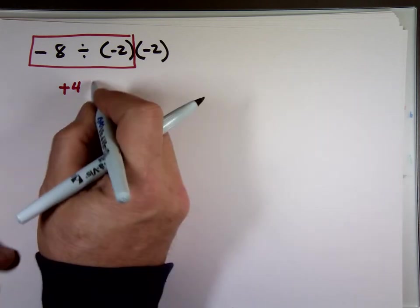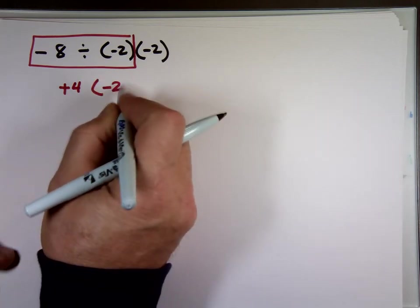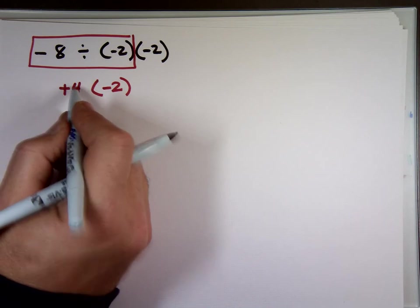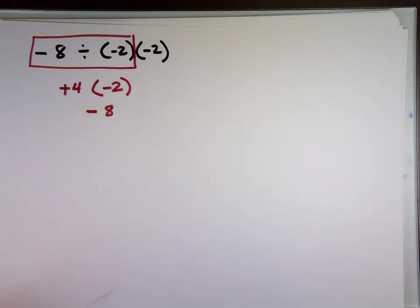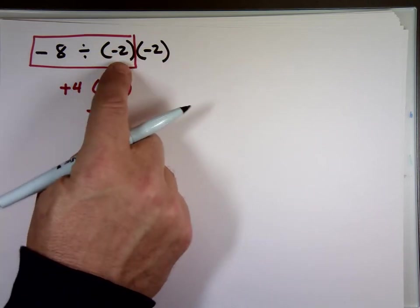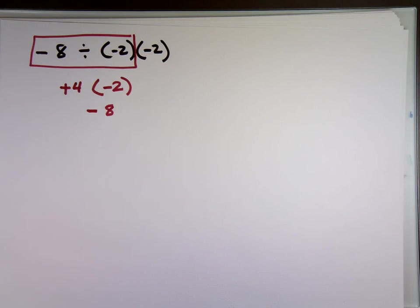Take that, and now you're going to multiply it by a negative two. What's the positive times the negative? Negative eight. A lot of people, when they see that, they want to multiply these numbers, make that a four, then divide them. It doesn't work that way. It's always left to right. If you see division first, you divide. If you see multiplication first, you multiply.